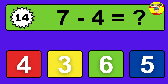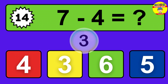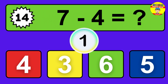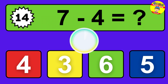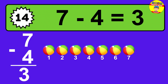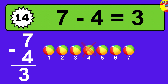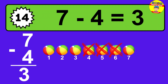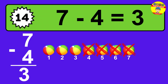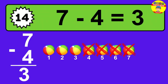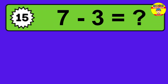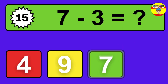Question fourteen: seven minus four equals what? The answer is seven minus four is three. Let's count it. One, two, three.